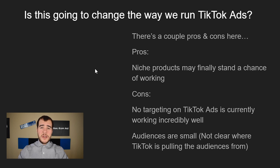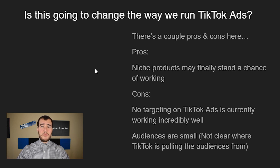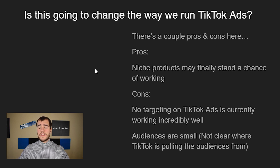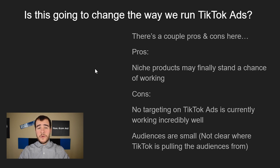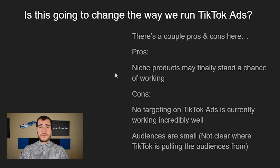One of the biggest pros is that niche products may finally start to work. Niche products have been a massive pain on TikTok ads — we've mostly been selling general products that anyone could buy. But if you own a brand tied to a specific niche, you couldn't really run TikTok ads because the targeting wasn't there. This could open the door to big brands and drop shippers selling bicycle accessories, fishing products, hunting products, and more. On the cons side, audiences are currently pretty small and it's unclear where TikTok is sourcing the data — but I think that's just because it's a new feature that hasn't fully rolled out yet.